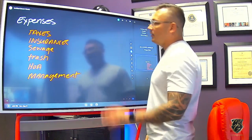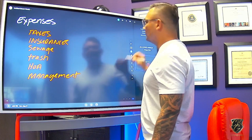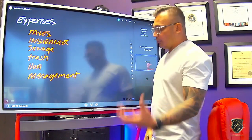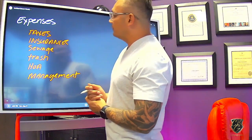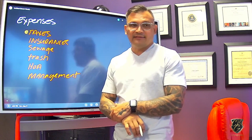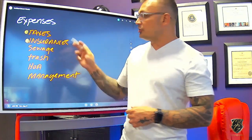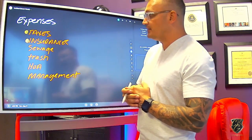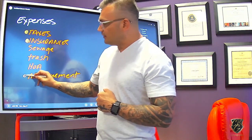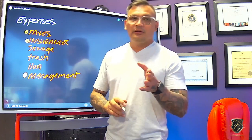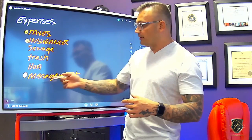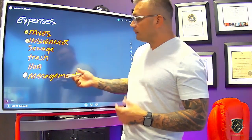Now let's head to the expenses column. There are a couple of things to realize when purchasing an investment property here in Las Vegas — there are a lot of expenses. We have property taxes, which are due every single quarter. We have insurance on the home — keep in mind insurance on an investment property is going to be a little more expensive than a primary, and if the property has a pool that may cost more due to liability. Management fees are important: if you manage the property yourself there's no expense, but if you have multiple properties or you're out of state, you may want to hire a property manager.